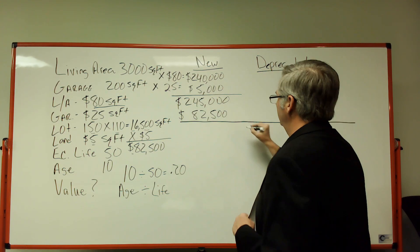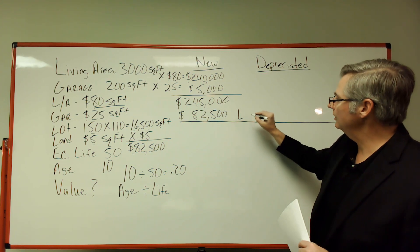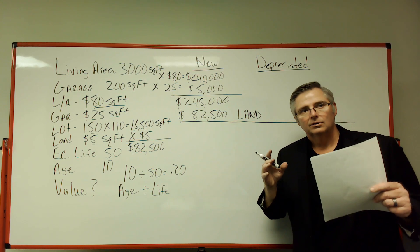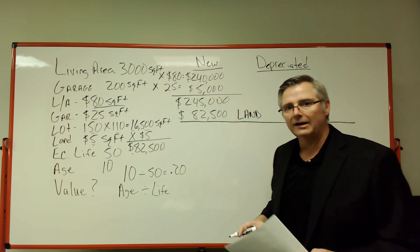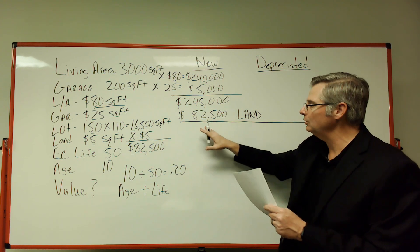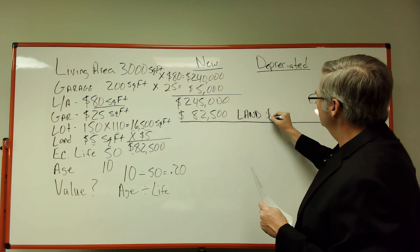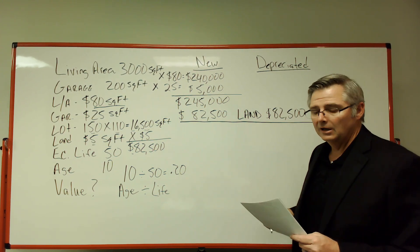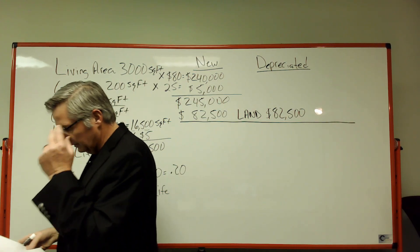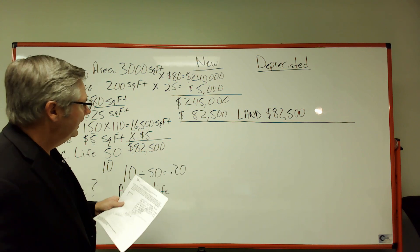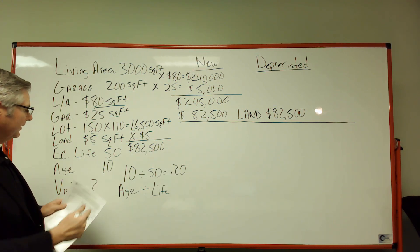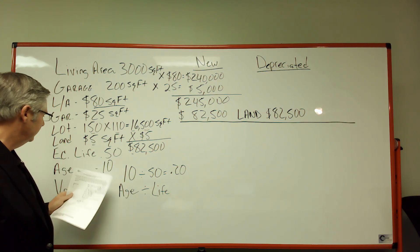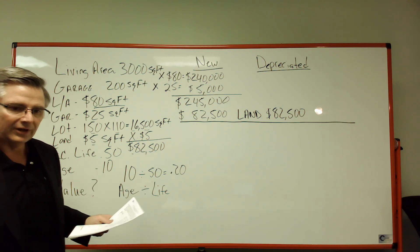The land value is $82,500. Now there's a reason I separate that — land never depreciates. So I can move that $82,500 number aside, because it's not going to change. The property has depreciated some. The economic life is 50 years and the effective age is 10 years, meaning the house is 10 years old and is expected to live 50 years total.